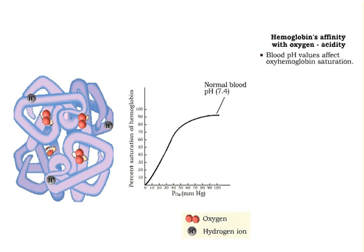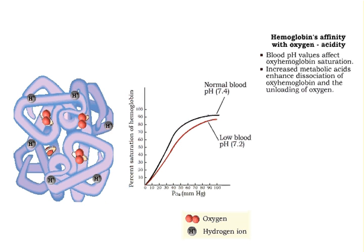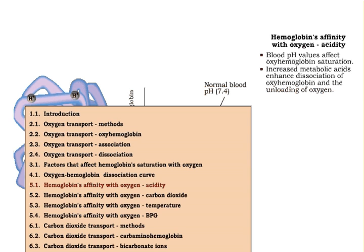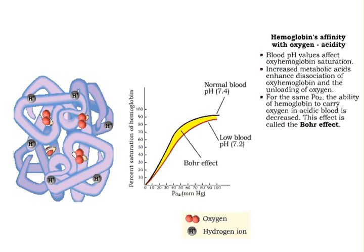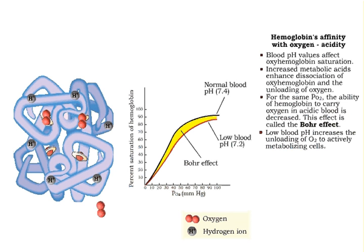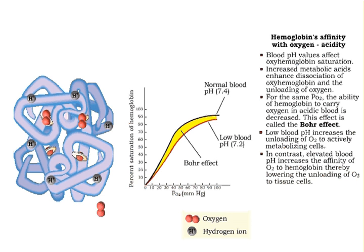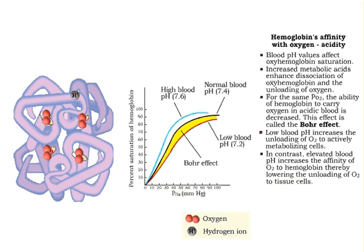Oxyhemoglobin saturation is also affected by blood pH values. Increased metabolic acids, like lactic acid and carbonic acid, enhance dissociation of oxyhemoglobin and the unloading of oxygen. This effect is called the Bohr effect. Lowered pH increases the unloading of oxygen from oxyhemoglobin, making oxygen available for actively metabolizing cells. In contrast, elevated pH values increase the affinity of oxygen to hemoglobin, thereby lowering the unloading of oxygen to tissue cells.